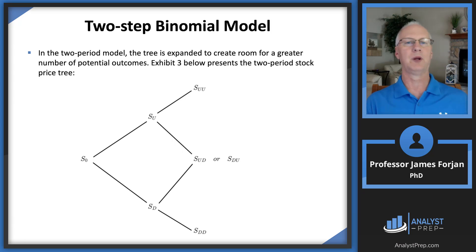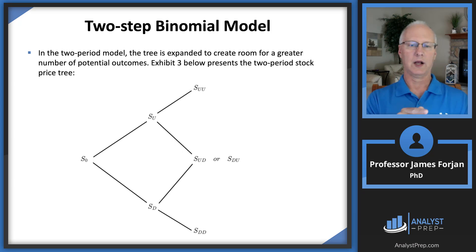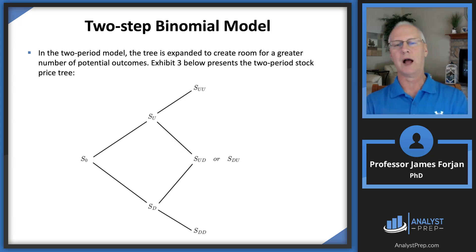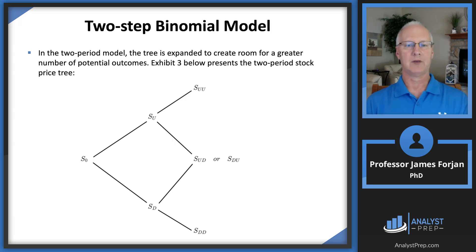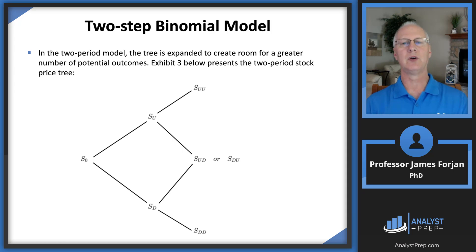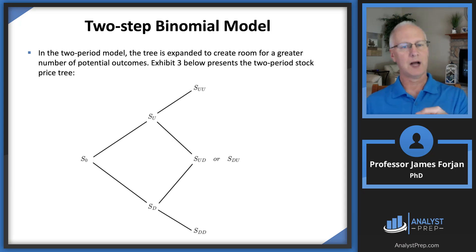We did the simplest framework with the one-period model, but we can extend that to two periods. The stock price today can go up then up again, down then down again, or up then down — and going up-then-down or down-then-up arrives at the same middle price. That gives us time period zero (S sub zero), time period one (S sub U and S sub D), and time period two (S sub UU, S sub UD, or S sub DD). To price the call option, we discount back two periods with three possible outcomes instead of one period with two.